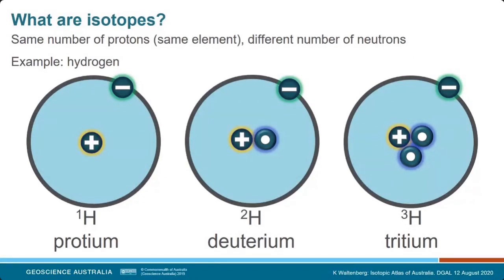What are isotopes? From high school chemistry: an isotope is when you have the same element — determined by how many protons an atom has — but a different number of neutrons. Here I've got three isotopes of hydrogen. Hydrogen with no neutrons is protium. If you put a neutron in the nucleus, you get deuterium, which is actually twice as heavy because it has twice as many particles in the nucleus. And if you add three, you get tritium.